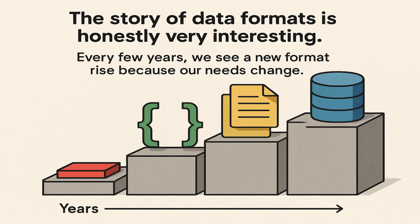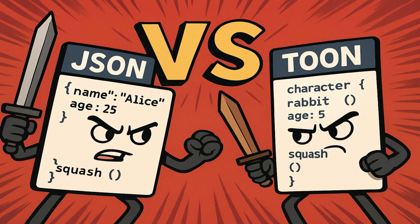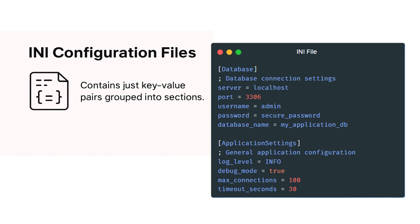The story of data formats is honestly very interesting. Every few years, we see a new format rise because our needs change. Before we get into JSON vs. TOON, let's take a look at the brief history of configuration formats over time. In the beginning, we had simple INI files. They handled basic configuration — one of the earliest ways to store configuration settings. It was simple and direct, containing just key-value pairs grouped into sections. They are still very common in Windows systems because they follow a very no-nonsense approach.